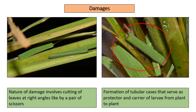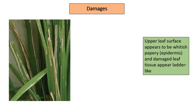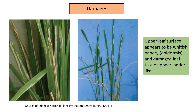Formation of tubular cases that serve as protector and carrier of larvae from plant to plant. These images show the tubular cases floating on water, thus serving as carrier of larvae from plant to plant, or as its mode of dispersion. Upper leaf surface appears whitish-papery and damaged leaf tissue appears lead-like.